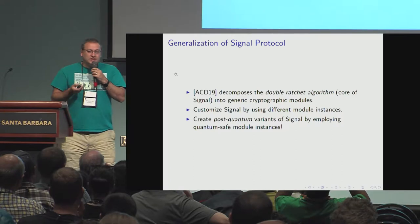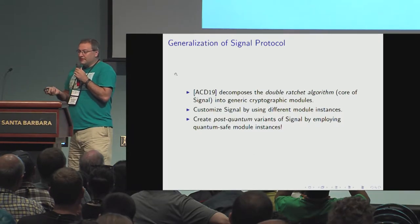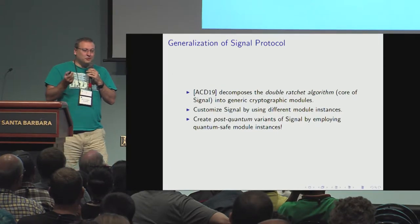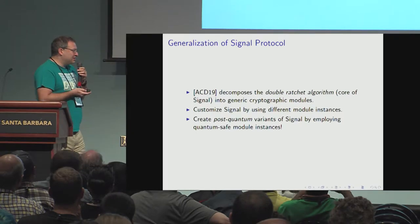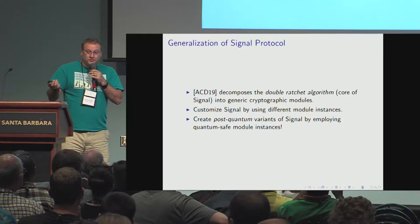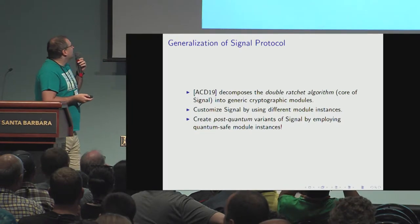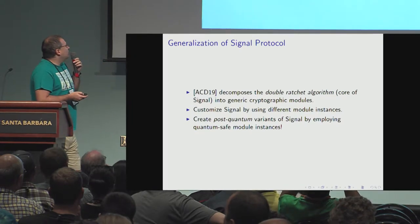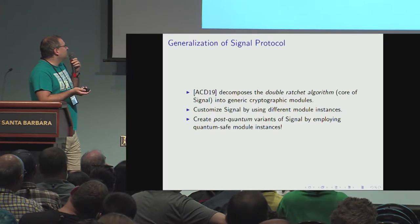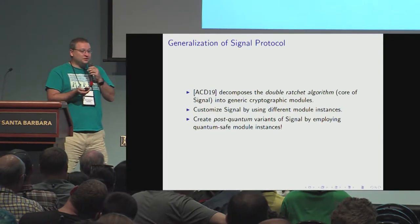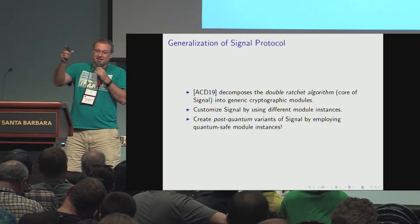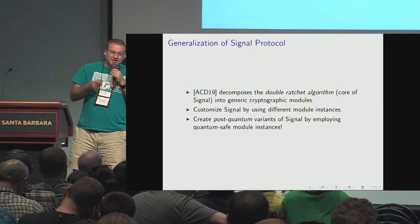In a Eurocrypt paper jointly with Joel Alvin and Sandra Coreti, who is here, we tried to write a paper that modularizes Signal and explains what Signal is, gives simple generalizations, and really proves it secure. We customized Signal by using differing modules, with Signal as a special case of this implementation. With this framework, you can just rearrange it like a jigsaw puzzle and plug in different things.